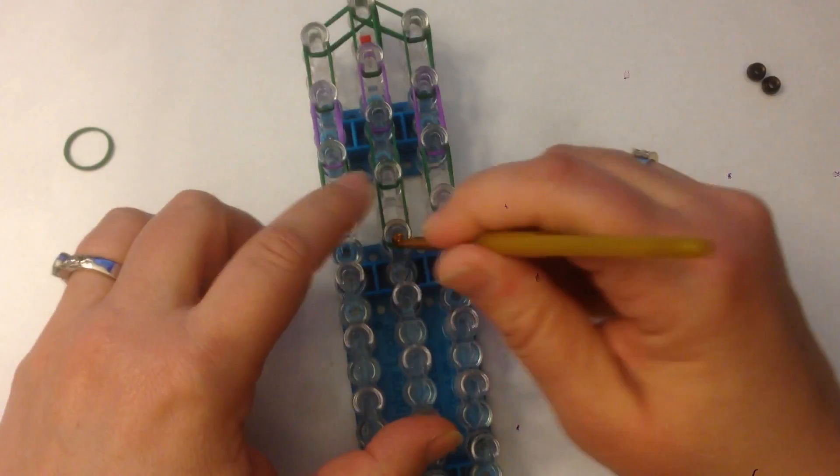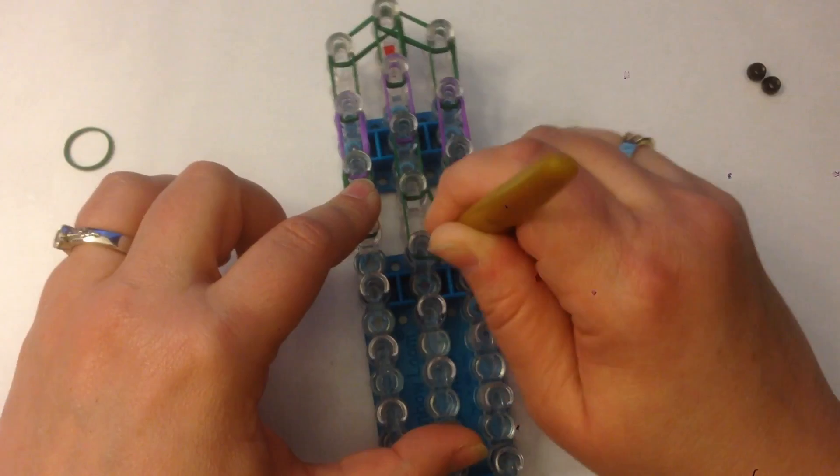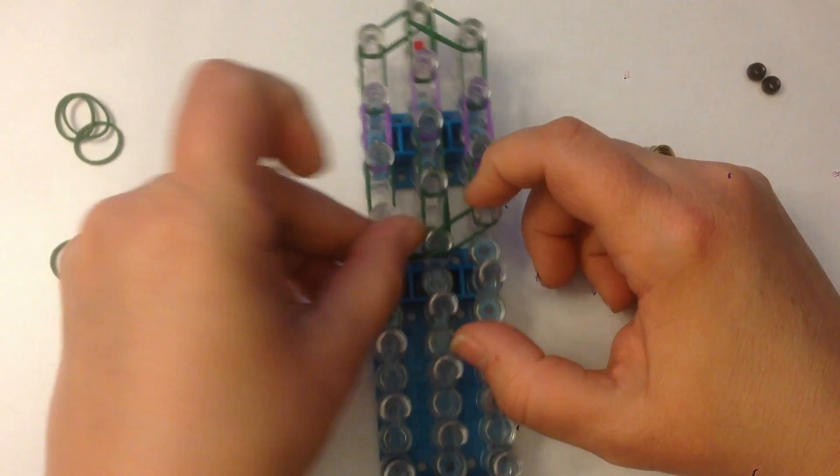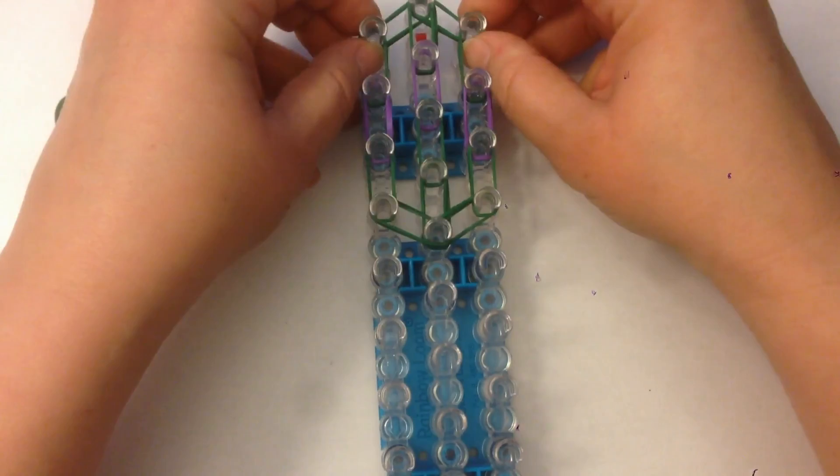If your bands look a bit twisted, I just tend to move my hook along the inside of them to untwist them. That seems to work quite nicely. We're going to go up for his chin like this. Push these down.